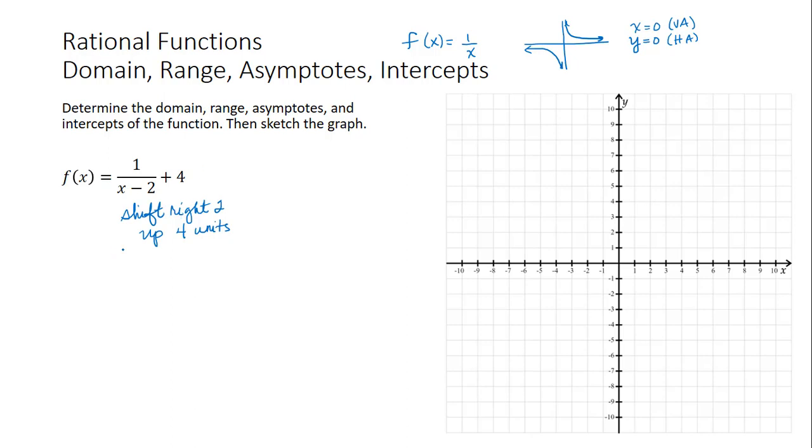We could also determine how we're going to shift right or left by setting this denominator equal to 0. x minus 2 is equal to 0 when x is equal to 2, and that's going to give us the equation of our vertical asymptote. So we know the vertical asymptote is at x equals 2, so we're going to have a vertical line through 2 on the x-axis.